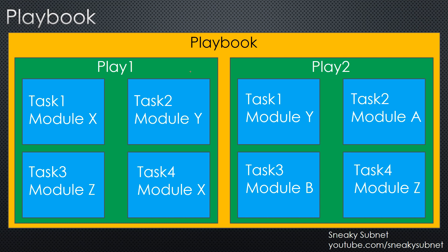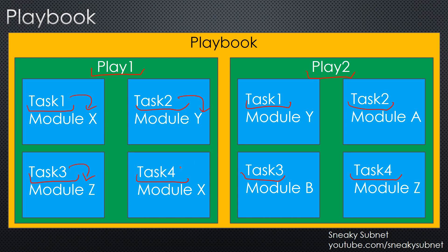A Playbook can contain one or more plays. Here we can see two plays: Play1 and Play2. Plays are run against one or more hosts. Plays can contain one or more tasks. Here we can see four tasks inside Play1 and four tasks inside Play2. A task invokes only a single module, and a module is the final element which controls what action will happen. Task 1 is tied to module X, task 2 to module Y, task 3 to module Z, and task 4 to module X. Different tasks can be tied to the same module — here task 4 and task 1 are both tied to module X.